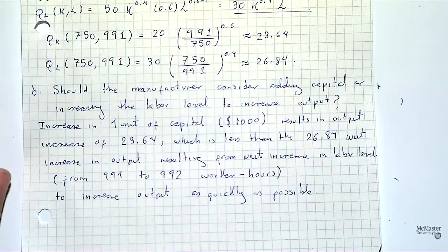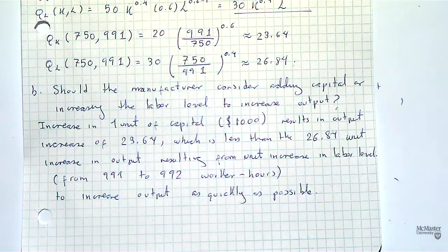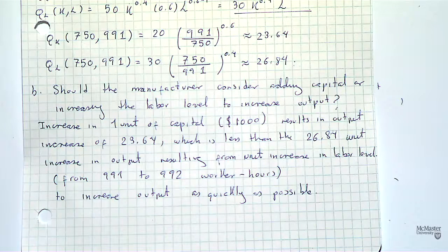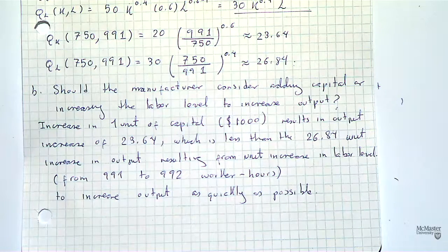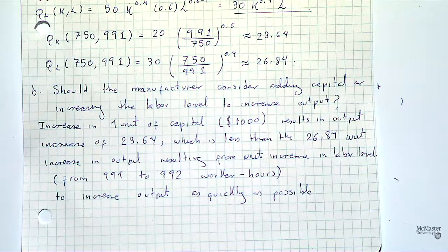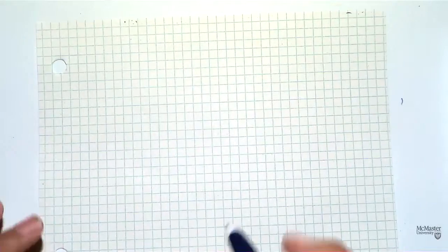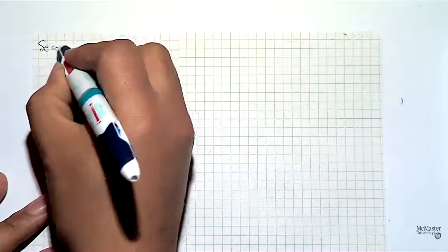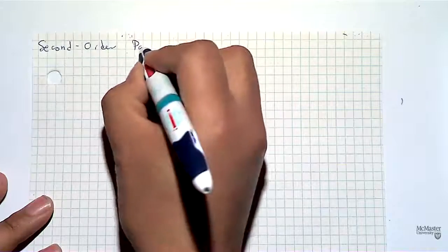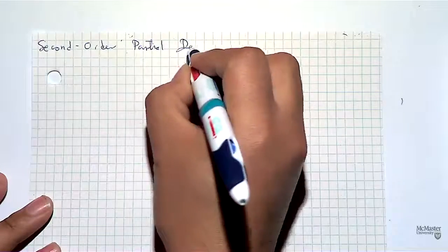That example is finished. Since we're now familiar with partial derivatives, we can move to second-order partial derivatives, just as in the 1D case where you go from first to second derivatives — especially useful when finding maxima and minima. Let's jump now to second-order partial derivatives.